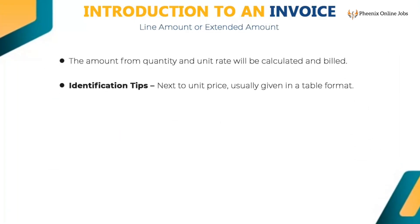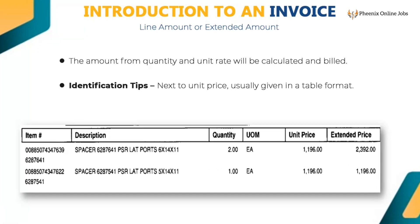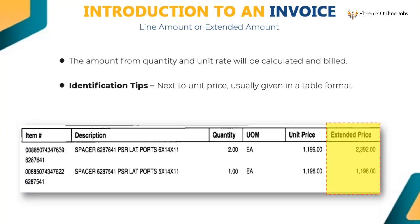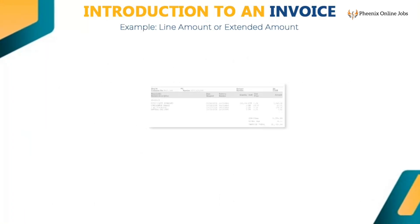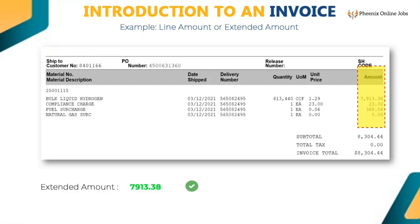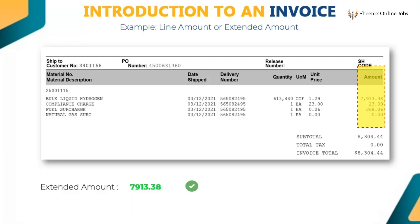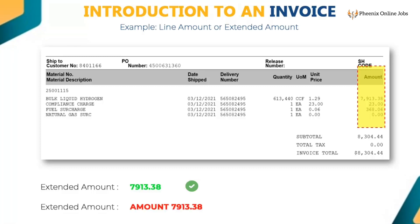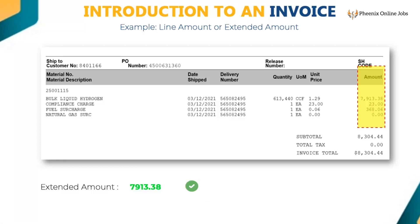The line amount is calculated from quantity and unit rate. It comes next to unit price in table format. Key the value 7913.38 for the first line amount, and key other amount values as per the image shown in the snippet. Do not key the word 'amount' or 'extended amount.' Key only numeric data for line amount. If 'extended price' or 'amount' is already populated, then remove those words.